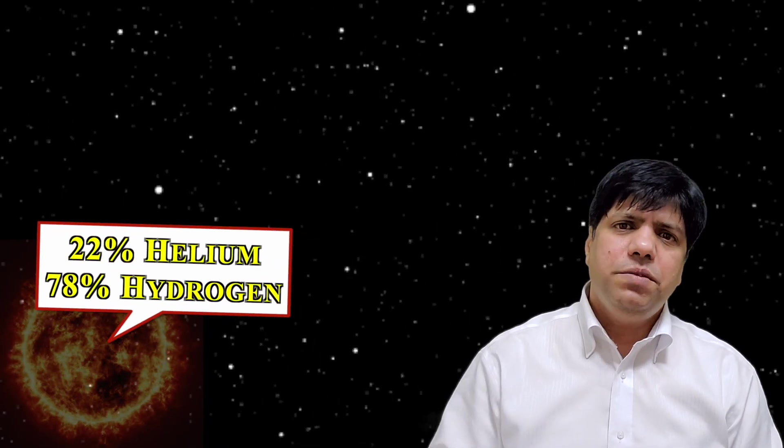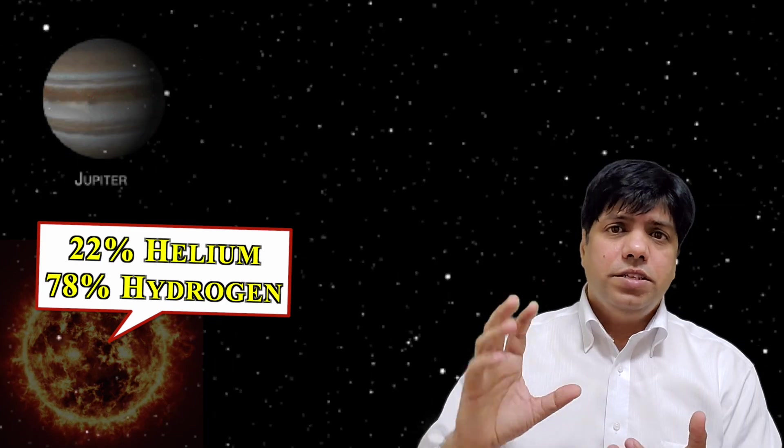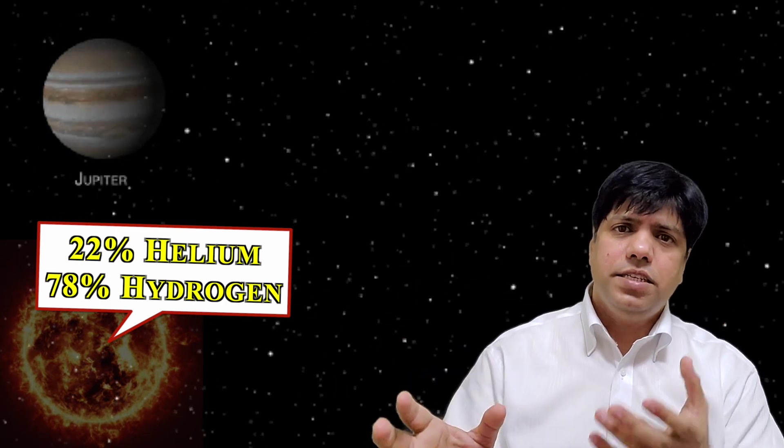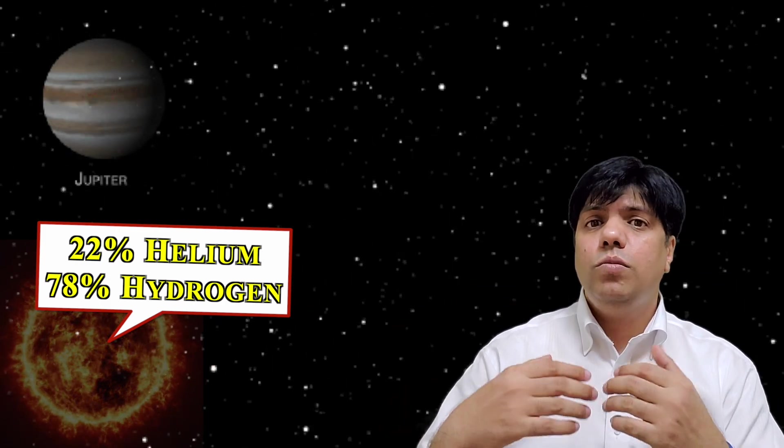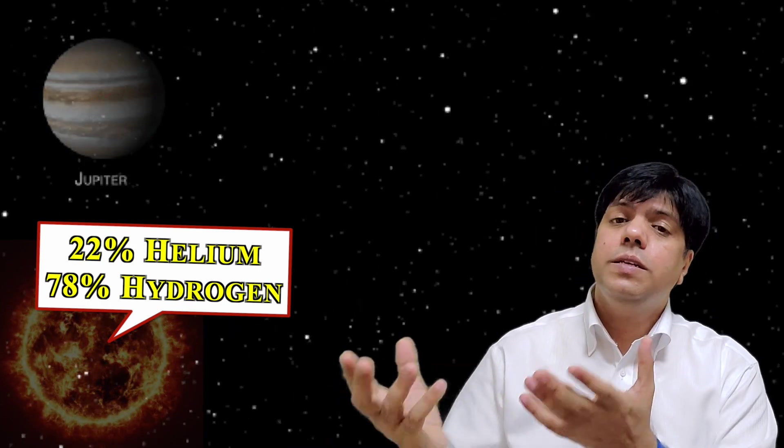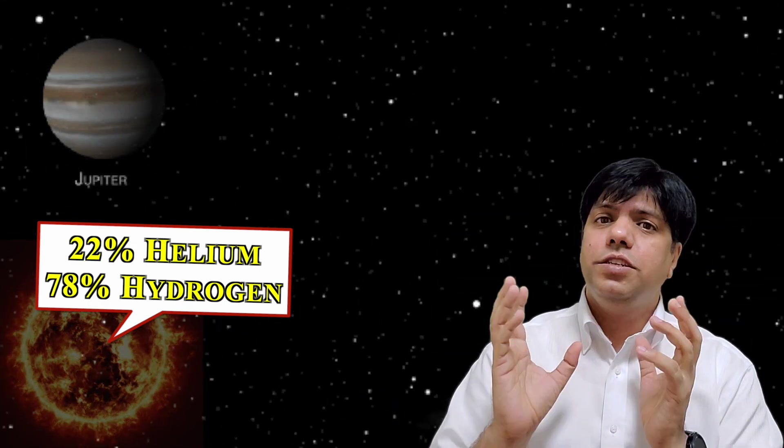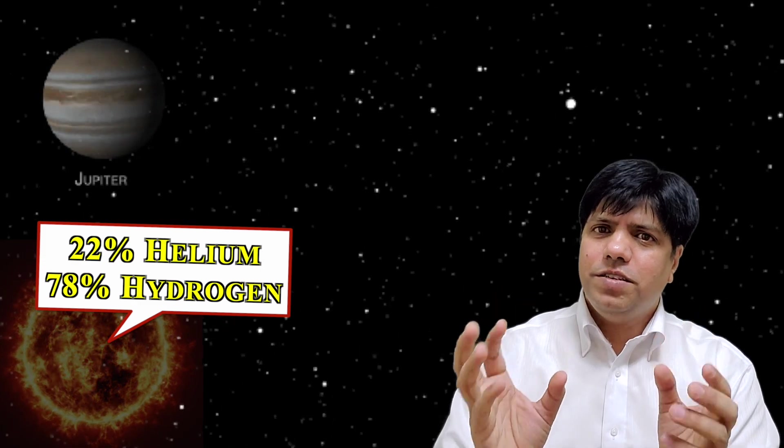And similarly Jupiter has the same chemical composition as sun. Actually Jupiter was almost a star but it couldn't for some reason but the chemical composition in Jupiter is still very similar to that of a star.